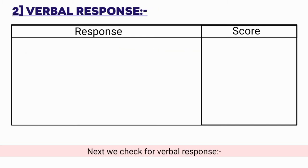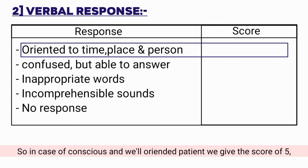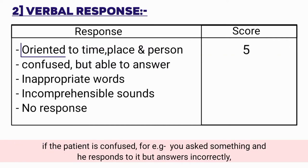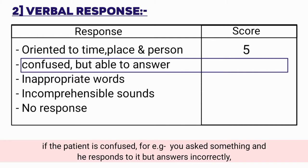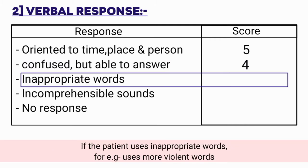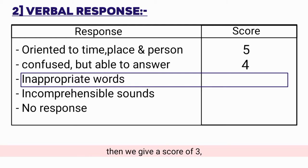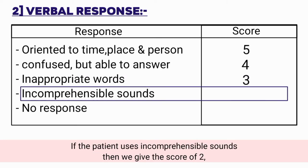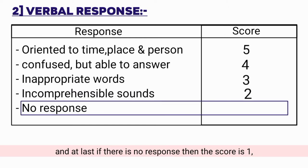Next we check for verbal response. For a conscious and well-oriented patient, we give a score of 5. If the patient is confused — for example, you ask something and they respond but answer incorrectly — we give a score of 4. If the patient uses inappropriate words, such as more violent words, we give a score of 3. If the patient uses incomprehensible sounds, we give a score of 2. And if there is no response, the score is 1.